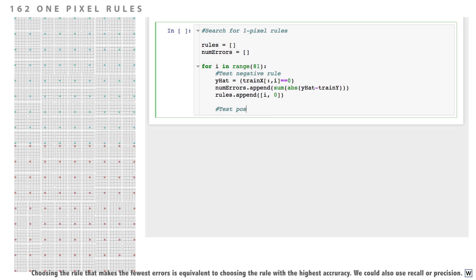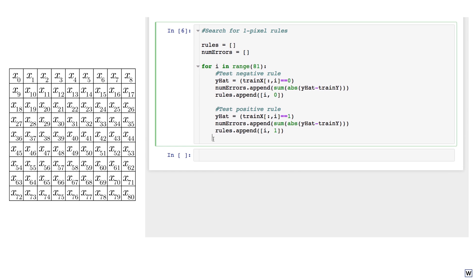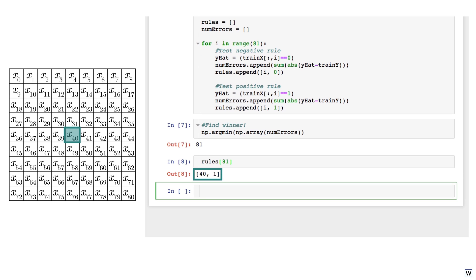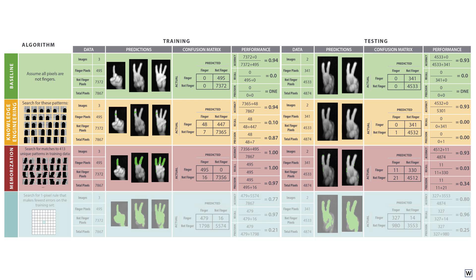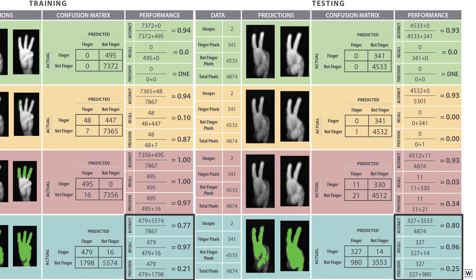Just as with our toy data, let's give every pixel a number, in this case from x0 to x80. Our winning rule classifies examples with a 1 in the x40 position as fingers. As expected, the performance of our winning rule is not great, but we do achieve higher precision and recall than our baseline approach and are still generalizing well, which hopefully means we're headed in the right direction.